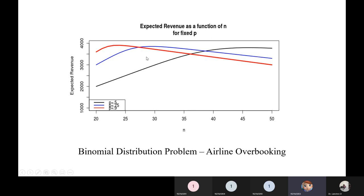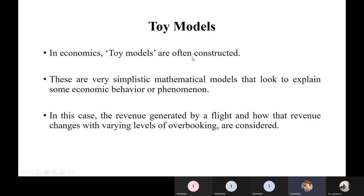If we use a binomial distribution the graph will look a certain way, but for this presentation I've taken a different model from economics — the toy model. Toy models are often used in economics and mathematics, and airlines use this toy model for ticket reservation. It is a very simple mathematical model used to explain the behavior of the overbooking problem and deal with it.